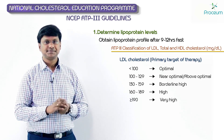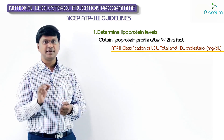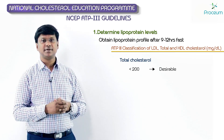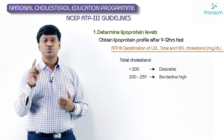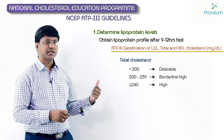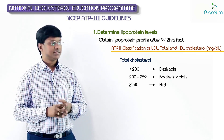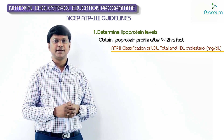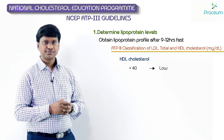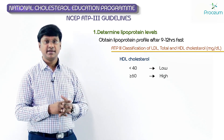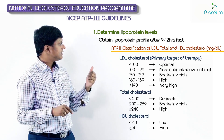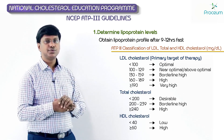According to ATP3 guidelines, total cholesterol levels: less than 200 is desirable; 200 to 239 is borderline high; more than 240 is considered high. For HDL cholesterol: less than 40 is low, and more than 60 is high, which is the good cholesterol.